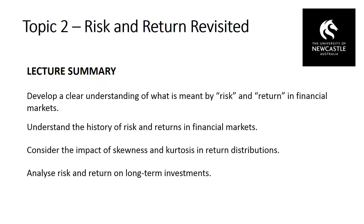Our discussion thus far about risk and expected returns has related to a one-period model — looking one period ahead at the expected return and the distribution of possible return outcomes and their probabilities. However, investors don't tend to invest in a one-period world; they invest over multiple periods, particularly over long-term horizons. A long-term investment is simply a combination of sequential one-period estimations. For example, in a given month there is an expected return distribution with a mean and variance; the next month's return should be independent if markets are relatively efficient, and this continues month on month for the duration of the investment.